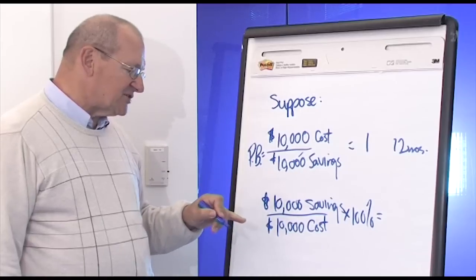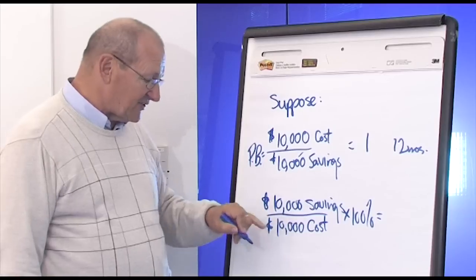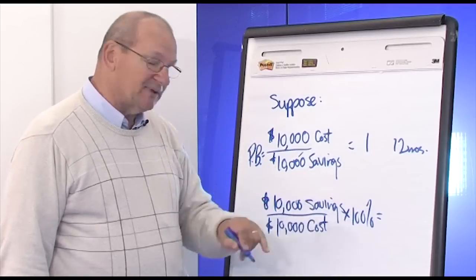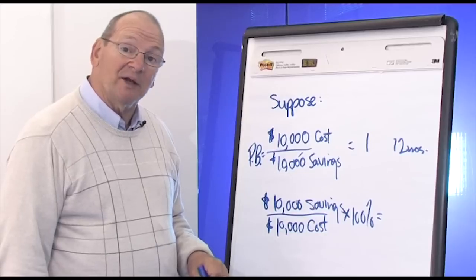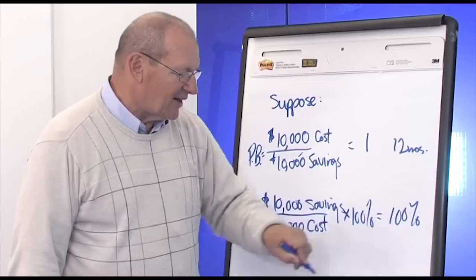Now, if you flip that equation over and put the savings on top, $10,000 divided by $10,000 cost, multiply by 100%, what is your ROI? Exactly. 100% ROI.